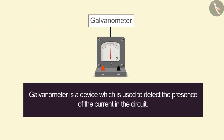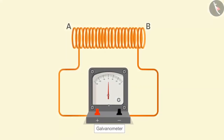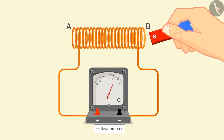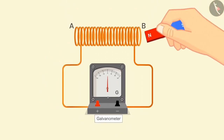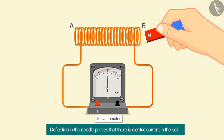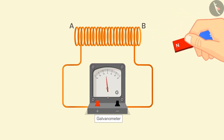A galvanometer is a device used to detect the presence of current in the circuit. After connecting the galvanometer in the circuit, take the north pole of the magnet near the coil — a deflection in the galvanometer's needle can be seen, let's say on the right side. This deflection proves there is electric current in the coil. The needle comes back to zero as soon as the motion of the magnet stops. If we withdraw the north pole away from the coil, a deflection in the opposite direction can be seen, showing the current is flowing in the opposite direction.